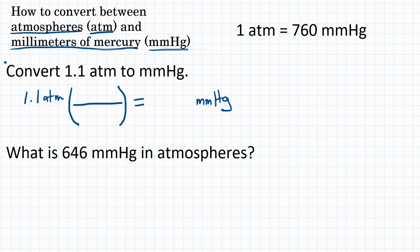To solve this, we need our units to cancel out in the appropriate way. Because we're starting with atmospheres, that needs to go on the bottom of our conversion factor so they cancel out — what's on top and on bottom cancels. Since we want millimeters of mercury, that goes on top. The relationship we need is: one atmosphere equals 760 millimeters of mercury.